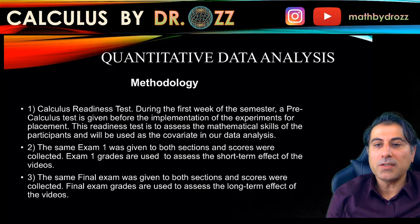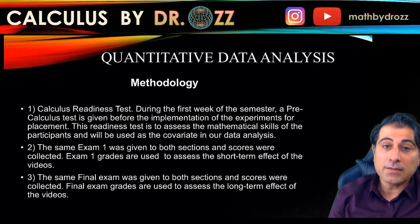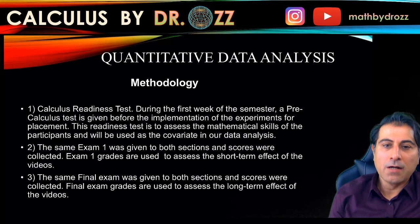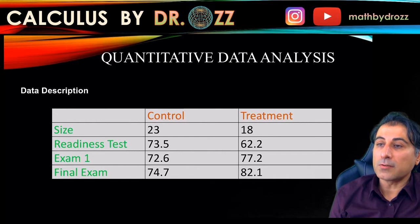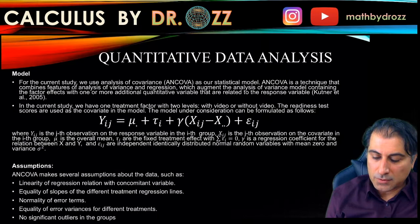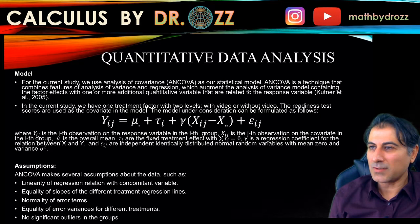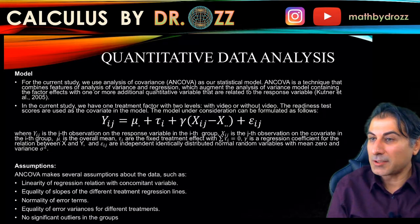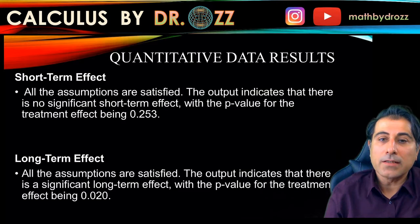In terms of methodology, at the beginning of the semester we implemented a calculus readiness test that everybody took, to see how prepared they were. All sections were given the same Exam 1 and the same final exam. In the control group we had 23 students; in the treatment group, 18 students. These are the readiness test scores, Exam 1 averages, and final exam averages across the groups. Colleagues Luke and Natasha worked on the statistical model — it's called ANCOVA — and I don't have the expertise on the details, but I'll show you the results.